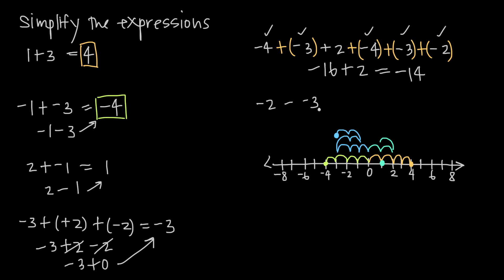The tricky part is subtracting negative numbers. For example, negative 2 minus negative 3. When we have a plus sign, we move in the direction indicated by the number's sign. But when we have a subtraction sign, we flip that direction. So negative 3 would normally mean move to the left, but the subtraction sign means we move to the right instead.